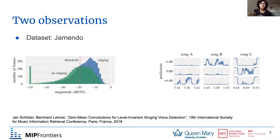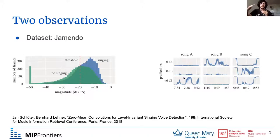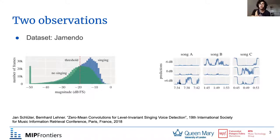The second interesting observation is that if you took a signal and started either increasing or decreasing its volume, the label would change. For example, song A is actually not singing voice, but as you increased it to plus 60 dB, suddenly the model says that singing voice is present.